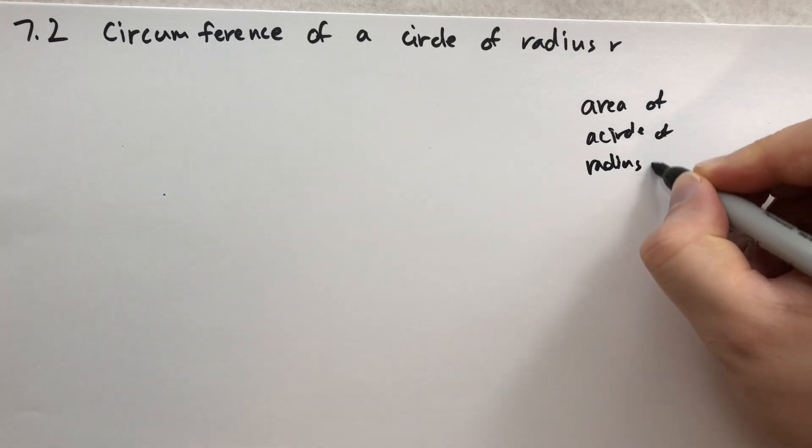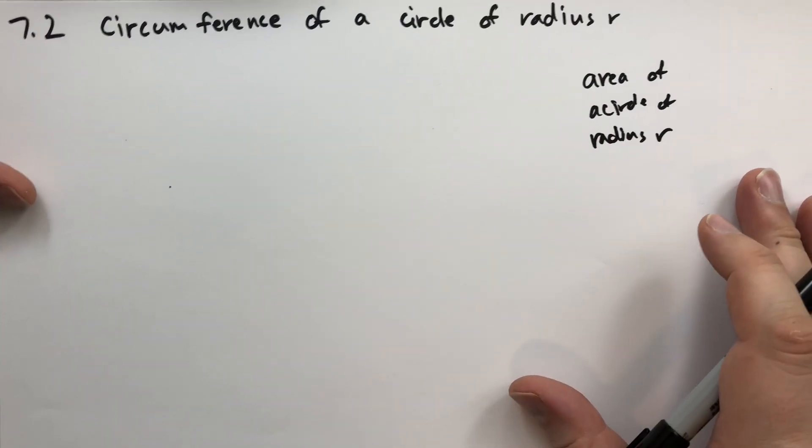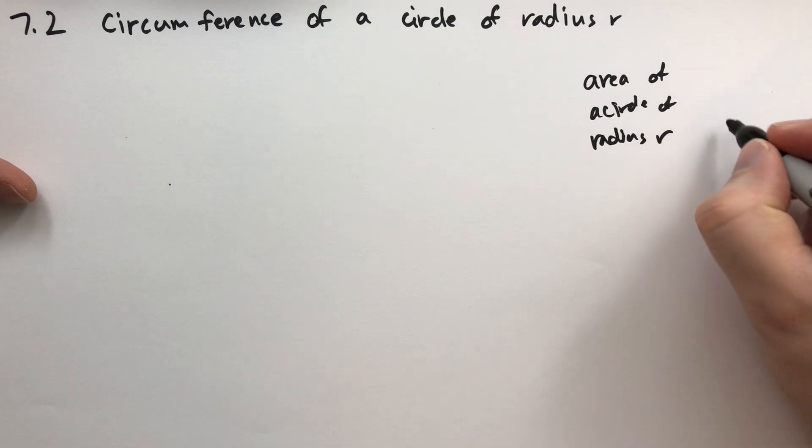that the area of a circle of radius r, and my handwriting is terrible, I'm holding the book in the left hand, I shouldn't do that. The area of a circle of radius r is πr².